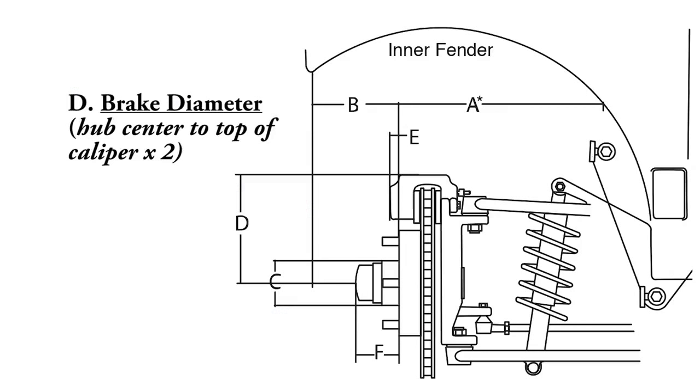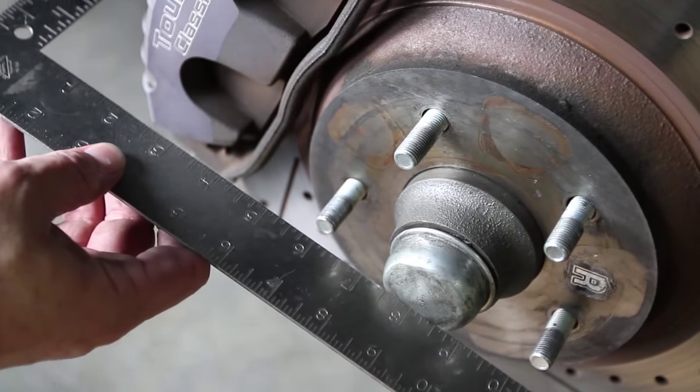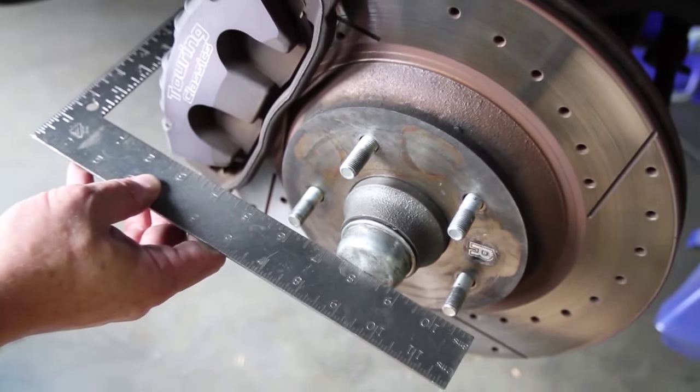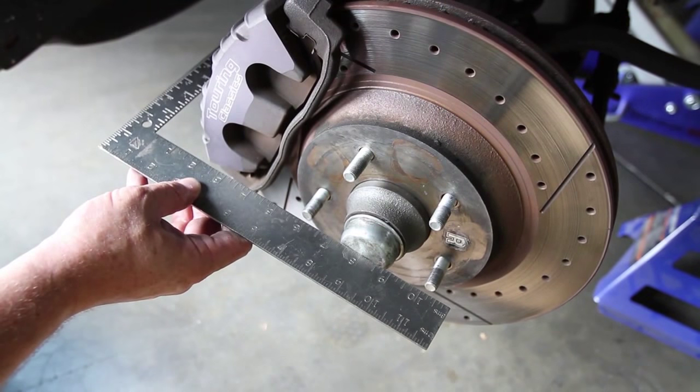Now, you will need to measure the brake diameter. This is especially important when using aftermarket brakes. The overall brake diameter can be a deciding factor in the wheel diameter you want to use. To measure the brake diameter, you will need to measure the distance from the center of the hub to the very top of the brake caliper. Multiply this measurement by two to determine the overall brake diameter. Write down this measurement for section D.